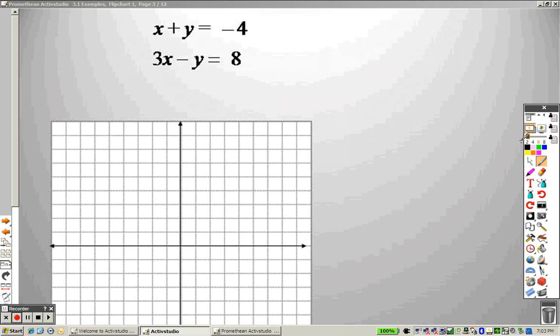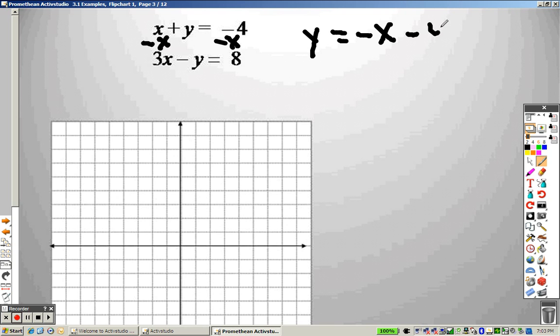When doing these examples, the best thing I can tell you to do is solve each of these for y. So to solve this one for y, I would subtract x to both sides, so I get y equals negative x minus 4.